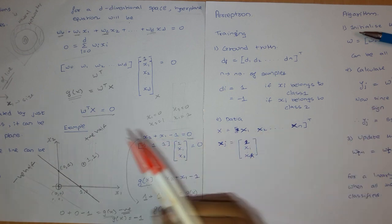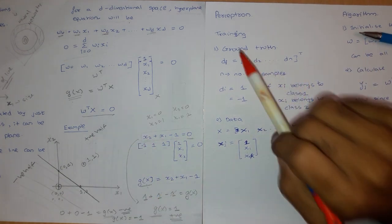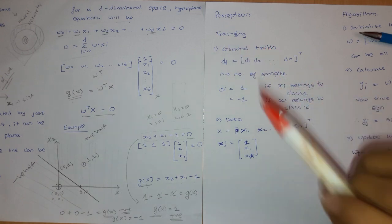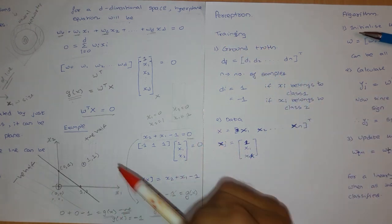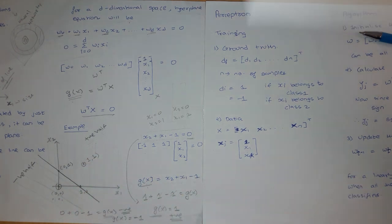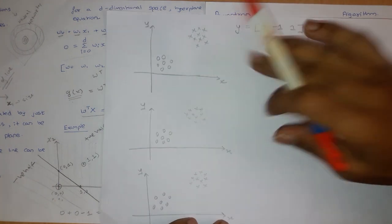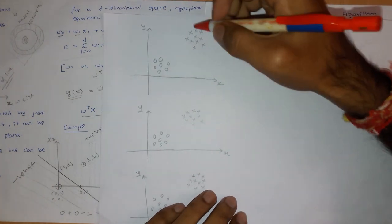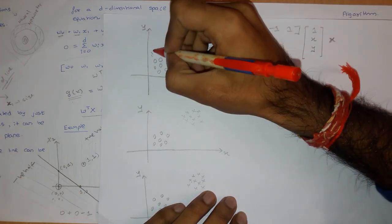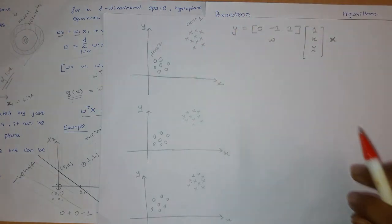We are going to train the perceptron algorithm. In the training phase, we know which data belongs to which class. For example, suppose this set of points belongs to class one and this set belongs to class two, and we want to separate both of these using the perceptron rule.